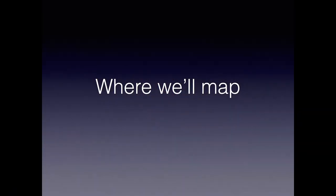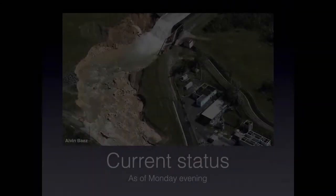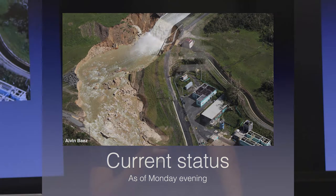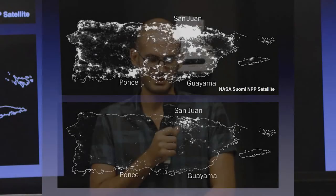We're going to map tonight in Puerto Rico because there's a dam on Lago Guajataca that is failing. As of last night it hasn't completely failed, but part of it is broken and there's a fear the whole dam is going to break and the lake will empty out into a village. The top photo shows infrared lighting in Puerto Rico a year ago; the bottom photo shows the lighting from two nights ago — so there's a lot of people who need help.